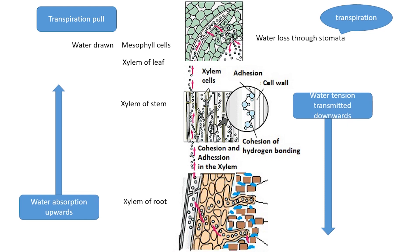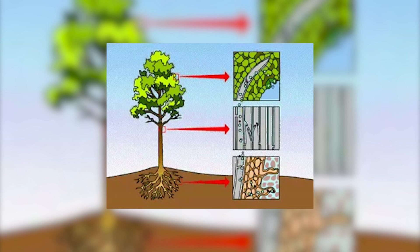This tension is transmitted downward to the water in xylem elements of roots through the petiole and stem and water is pulled upward to the transpiring surfaces.